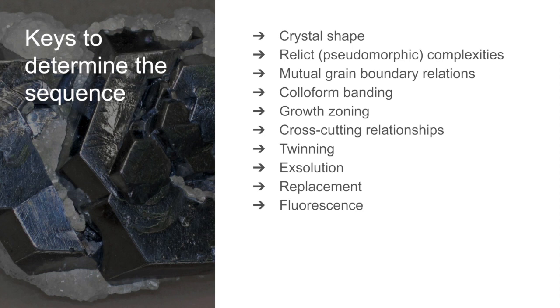Exsolution intergrowths provide the best evidence that simultaneous deposition has taken place. On segregation, a granular or allotriomorphic texture also called as mutual boundary texture occurs. In that case, the two minerals will have smooth curved contacts without projections into each other.